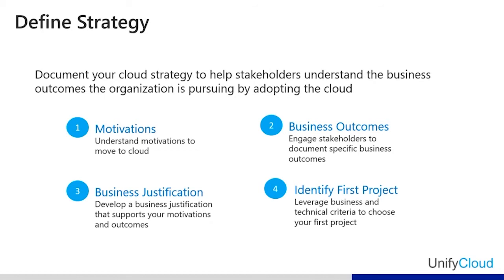The first step is understanding the motivations — why a company would like to move to the cloud in the first place. Second, map those motivations to specific business outcomes. Third, identify the business justification for those outcomes as part of the company strategy. Finally, use motivation, business outcomes, and business justification to drive the selection of the first workload to move to the cloud, along with other criteria for recommending the first project.